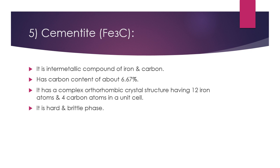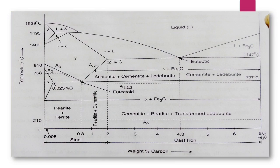The next phase is the cementite phase, that is Fe3C. It is the intermetallic compound of iron and carbon — called intermetallic because there is a high percentage of carbon and a metallic structure forms in iron. It has a high carbon content of about 6.67%, a complex orthorhombic crystal structure with 12 iron atoms and 4 carbon atoms in a unit cell, and it is a hard and brittle phase.